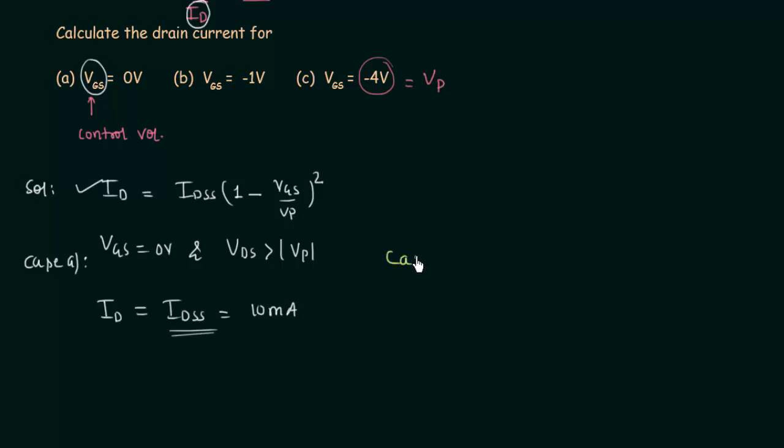Now we will solve case B. In case B, VGS is equal to -1V, and now we will use this formula. ID is equal to 10 mA times (1 - VGS/VP) squared. VGS is -1 and VP is -4. So -1 divided by -4 is equal to 0.25. So here we have 0.25 squared. When you solve this, you will have the drain current ID equal to 5.625 mA. This is the answer for case B.